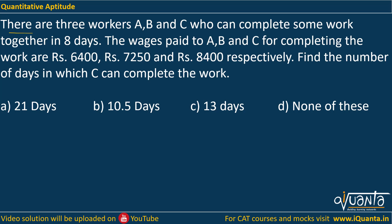The question is: there are 3 workers A, B, C who can complete some work together in 8 days. The wages paid to A, B, C for completing the work are Rs. 6400, Rs. 7250, and Rs. 8400 respectively.